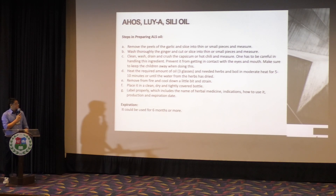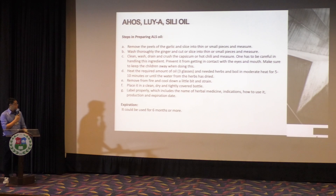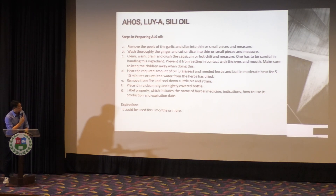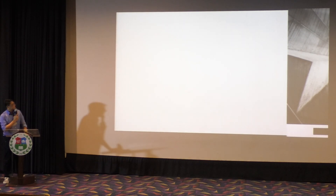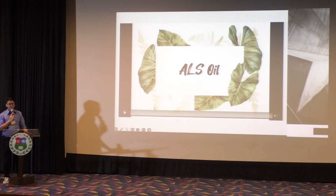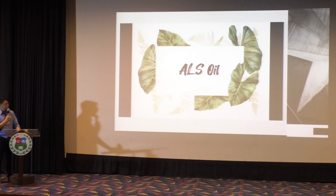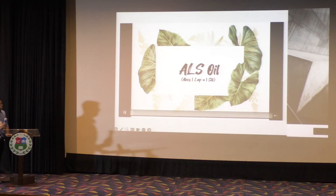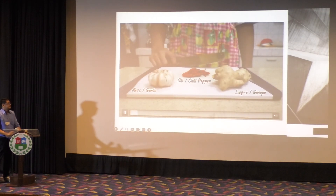Remove from fire, cool down a bit, and strain. Place in a clean, dry, and tightly covered bottle. Label properly, including the name of the herbal medicine, indications, how to use it, and production and expiry date. The oil can last for up to six months or more. For my sample in creating the oil, I only used half of the measurements — one half of each ingredient and one and a half cups of oil.